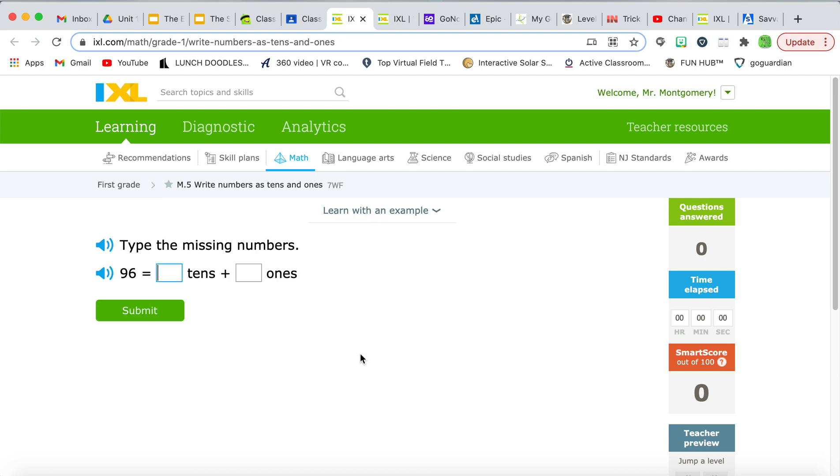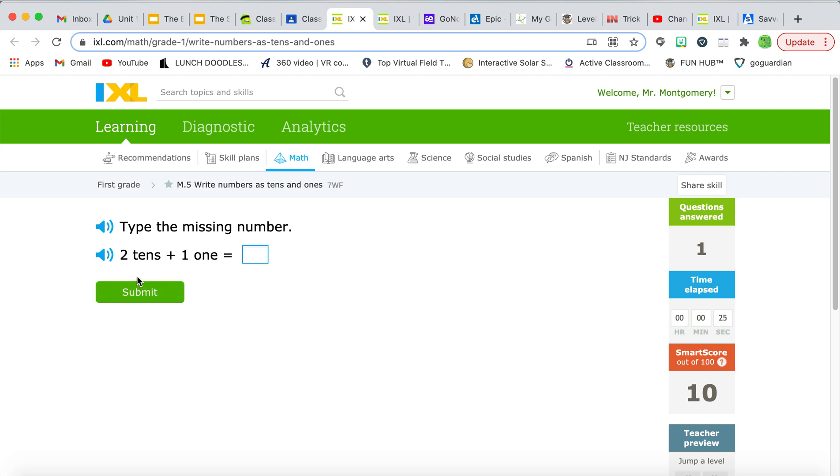And it's going to look just like this, where it's going to say type the missing numbers. They want you to break this number down into its parts. How many tens does it have? Well, we look at the tens place. There's a nine. So, I type a nine. And then, how many ones? I look at the ones place. There's a six. So, I type a six. And that's it. And some of them, we have to put the numbers together. If we have two tens and one one, what big number does it make? Well, just remember, two in the tens place. So, we type two, and then a one in the ones place. We type a one.